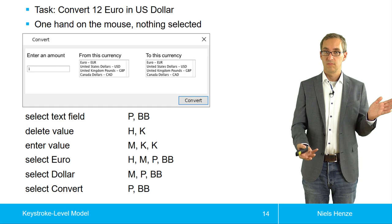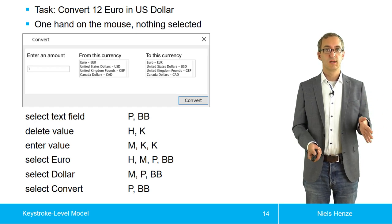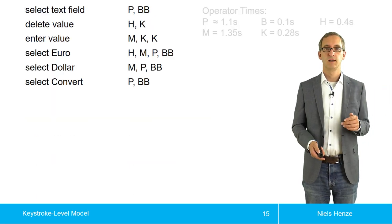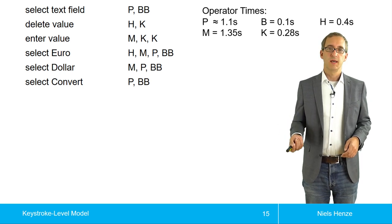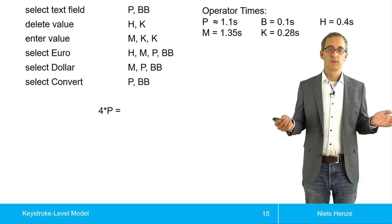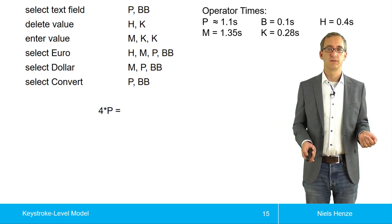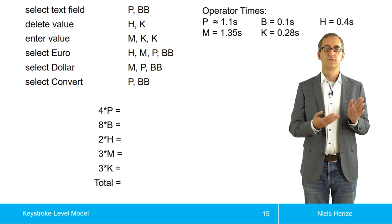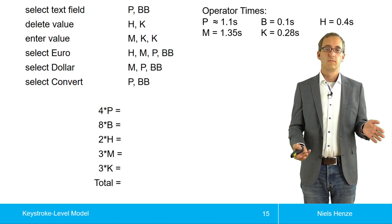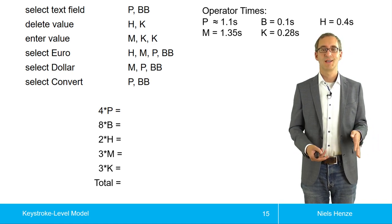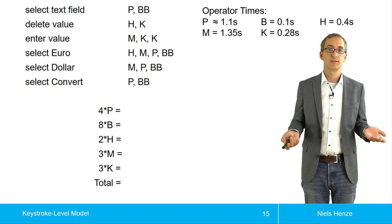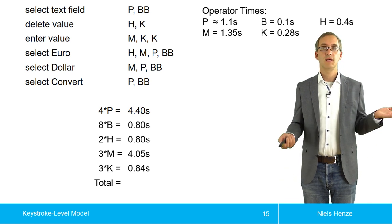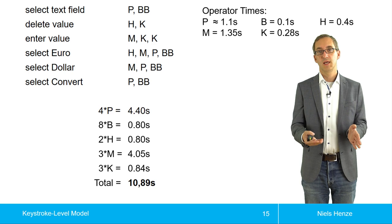Now we have these KLM operators. What we can do now is get an exact number out of it. We have these operators, and we know how long each operator takes, and we just take the average. We know there are four pointing operations, and pointing takes 1.1 seconds, so it's 4.4. We have eight Bs, two homing operations, three mental operations, three keystrokes. For each of them we can figure that out using multiplication: 4.4 seconds, 0.8 seconds, and so on. In the end we can just add them up and come up with 10.89 seconds.